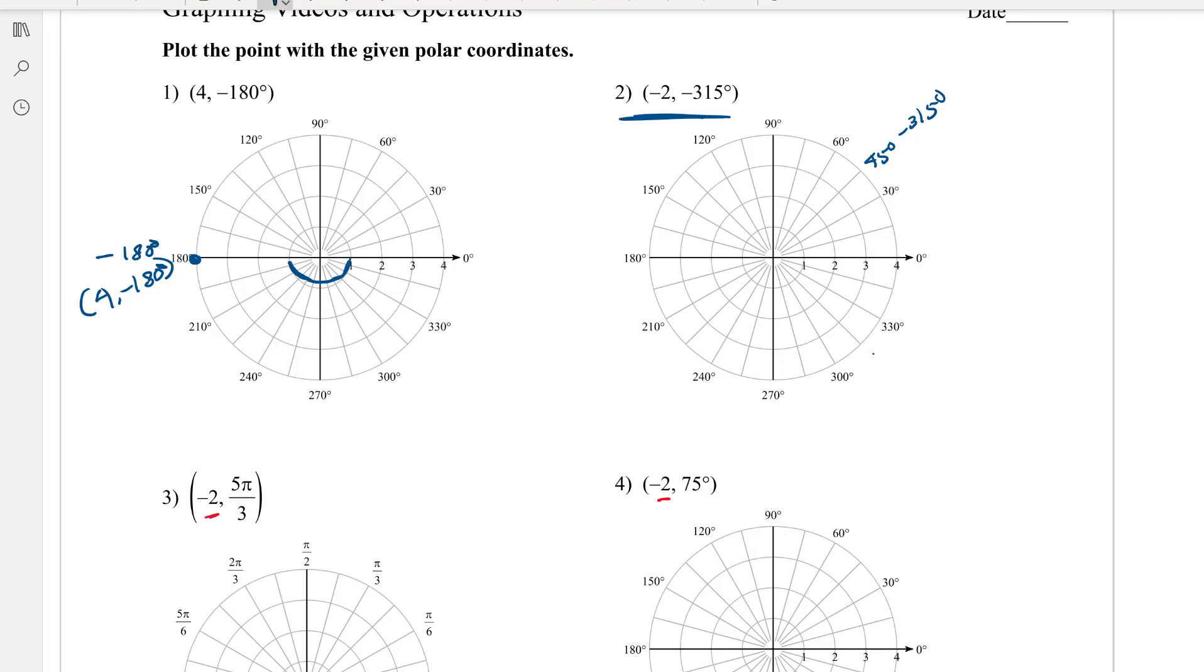It's this angle, but we have a radius of -2. So instead of being here, you now go in the negative direction. Imagine you had this angle and you carried it all the way through, and you go to -2 and then follow it down to that angle. That's that point right there.